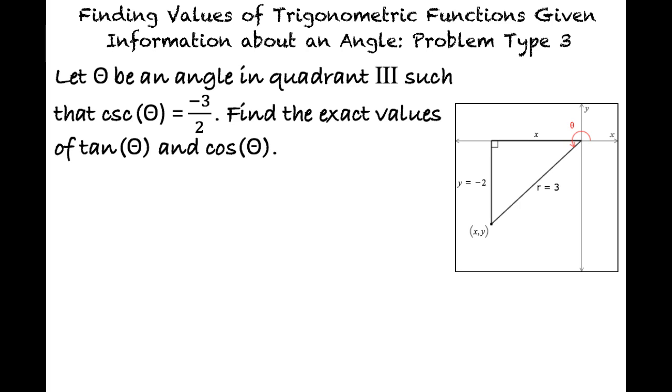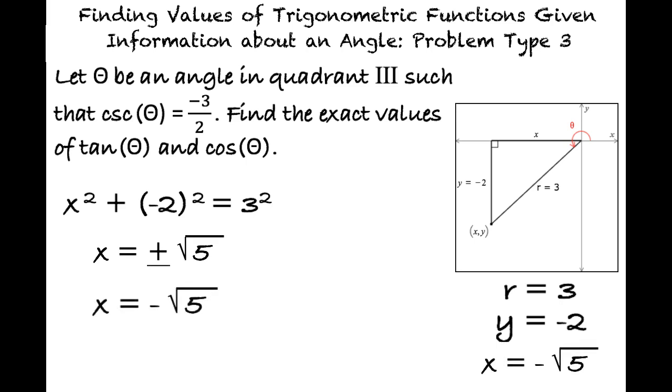The cosecant is equal to the hypotenuse over the opposite, thus the values of r and y are given to be 3 and negative 2 respectively. We know that the y is negative because quadrant 3 has negative values for y. Substituting these values into the Pythagorean theorem yields x squared plus negative 2 squared equals 3 squared. Solving for x yields plus or minus the square root of 5, and since quadrant 3 has negative values for x and y, we can state that negative square root of 5 is our value for x, right?